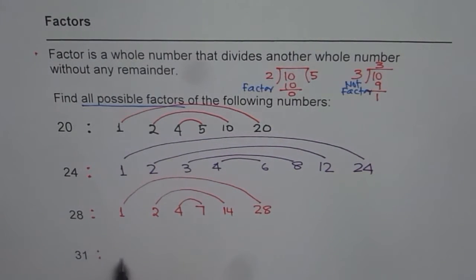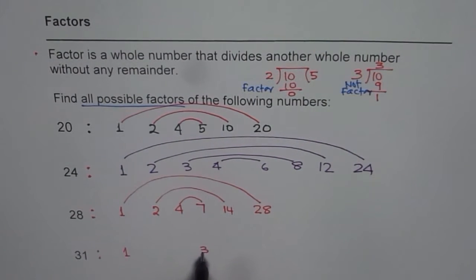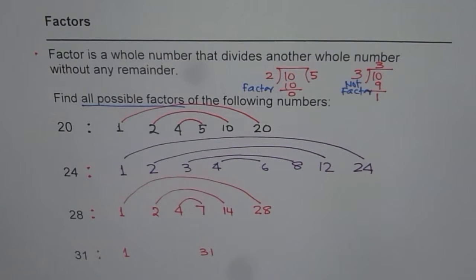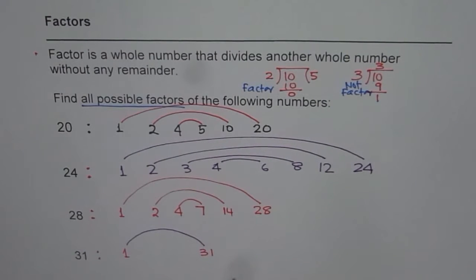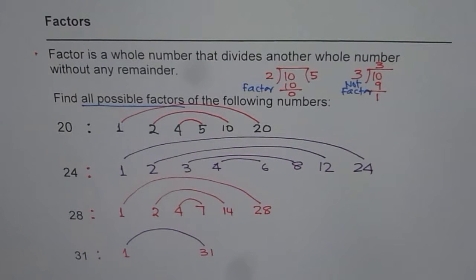31: 1 times 31 is 31. But do we have any other factor of 31? There is no other number which divides into 31 without any remainder. So we have only 2 factors.